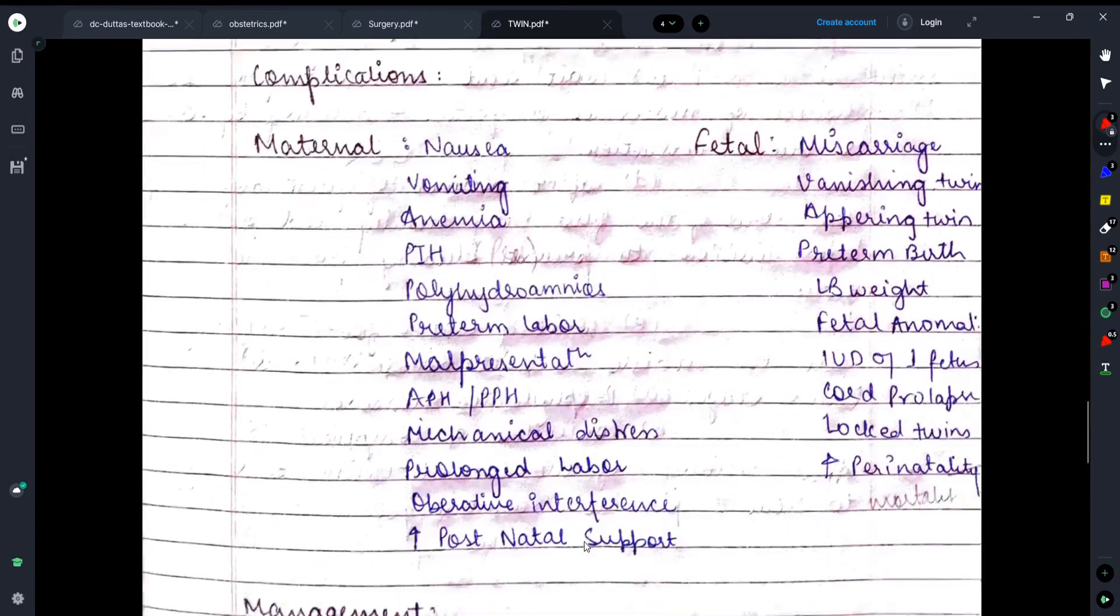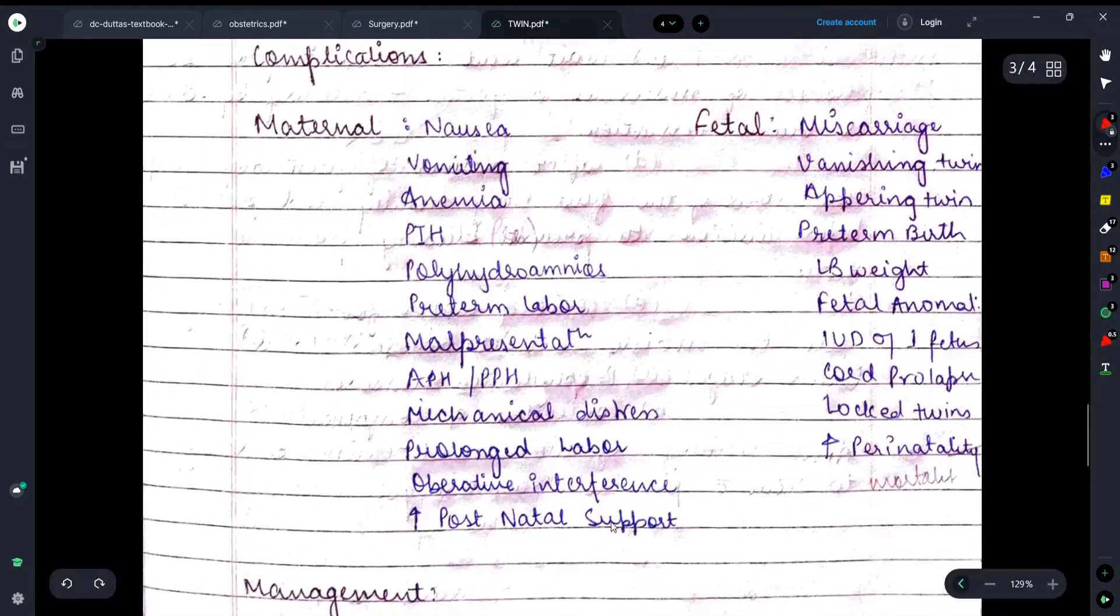Moving on, let's start discussing the complications - what complications can be seen in the mother and the fetus during twin pregnancy? Here it's written that the mother may suffer from nausea or vomiting. Sometimes the mother may have anemia problem. Sometimes the mother may suffer from pregnancy-induced hypertension, that means preeclampsia, the condition of preeclampsia and eclampsia. Polyhydramnios condition can occur. Preterm labor can occur. Malpresentation of fetuses can occur.